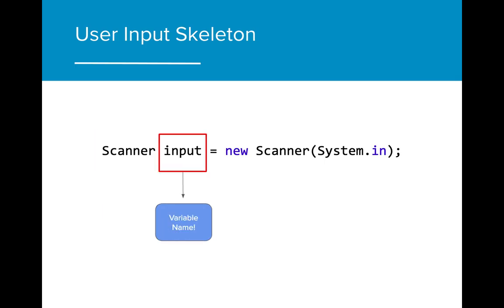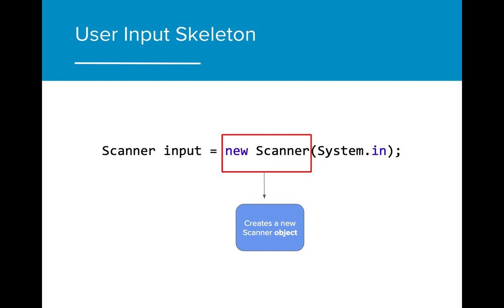Once the data type is declared, the next part is naming the variable. While in this example we use the name 'input', you can use any variable name when writing the initial steps for user input. The next part of this line is the creation of a new Scanner object. In order to create a Scanner that will search for user input, we need to first create a new Scanner. The keyword 'new' is used to indicate that we are creating a new Scanner object. We'll learn more about this in the next unit.